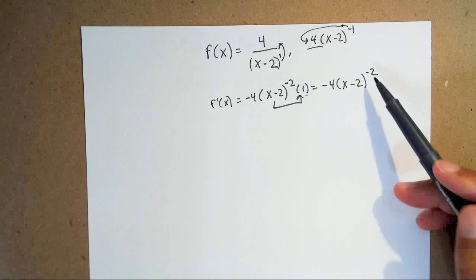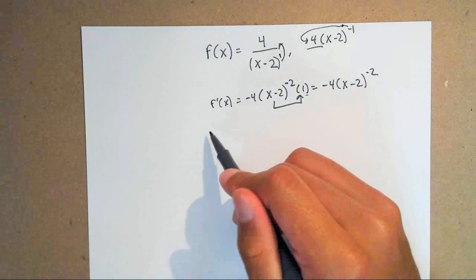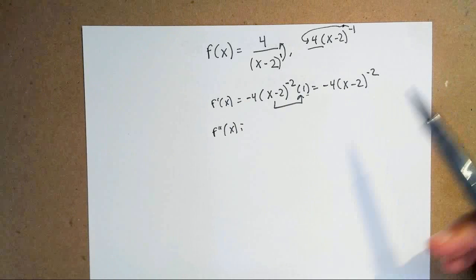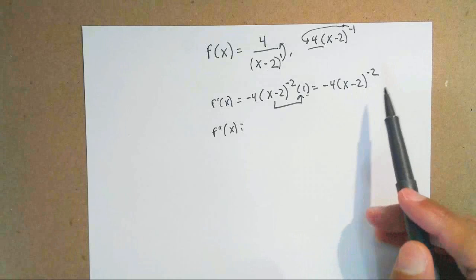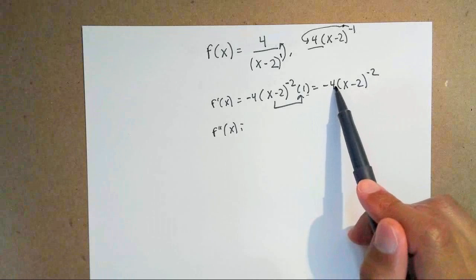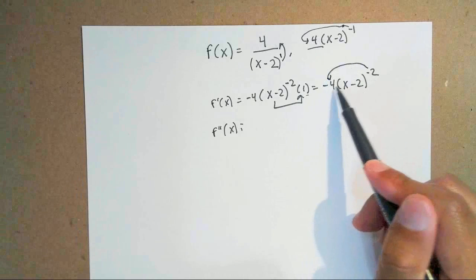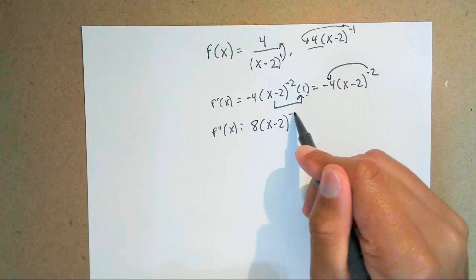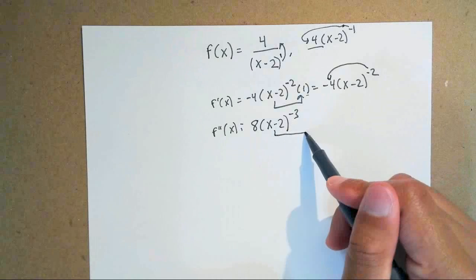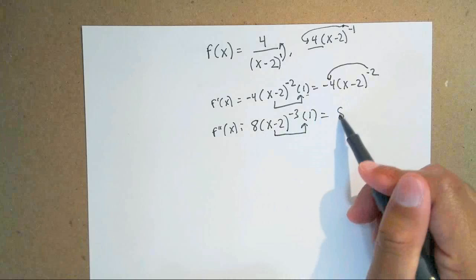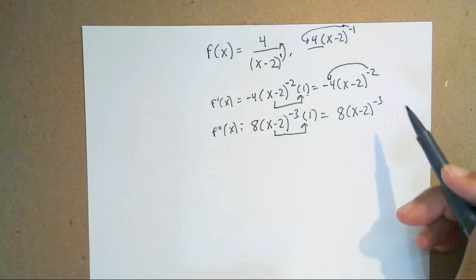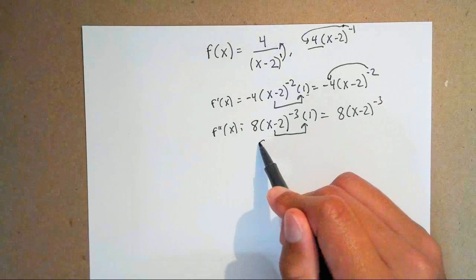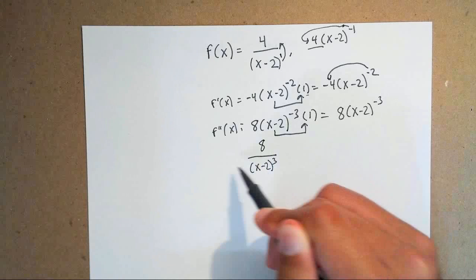Since my goal is to find the second derivative, I don't need to simplify the first derivative yet. Looking at the first derivative, there's no variable next to the 4, so it's another chain rule. Multiply negative 4 by negative 2 to get positive 8, keep the inside the same, subtract 1 from the exponent to get negative 3, and the derivative of (x minus 2) is 1 again. So the second derivative is 8 times (x minus 2) to the negative 3, which simplified is 8 over (x minus 2) cubed.